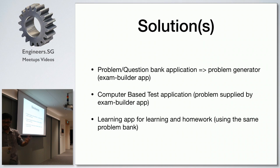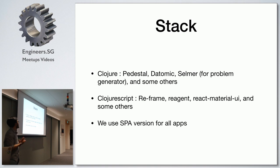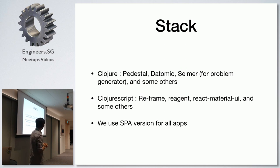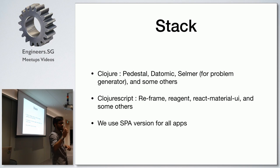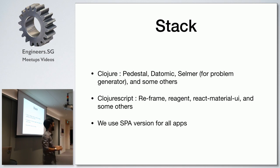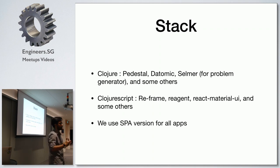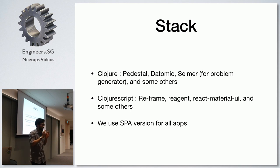This is the application stack. For the most part it's a typical Clojure web stack. We use Pedestal for routing — we chose Pedestal over Compojure because Pedestal is more explicit, whereas Compojure has a lot of magic happening that we don't fully understand.